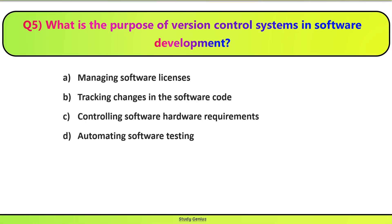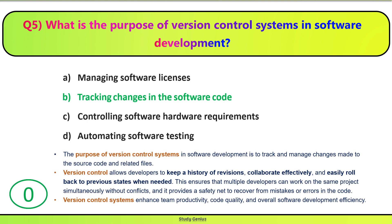Question 5. What is the purpose of version control systems in software development? Software development mein version control systems ka purpose kya hai? A. Managing software licenses. B. Tracking changes in the software code. C. Controlling software hardware requirements. D. Automating software testing. Correct answer is B. The purpose of version control systems is to track and manage changes to the source code and its related files.